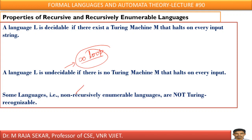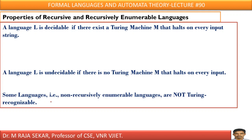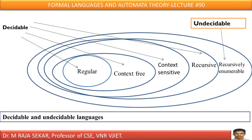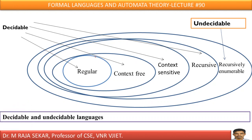In the case of non-recursively enumerable language, your machine may accept and halt, or not accept and halt, or they may enter into an infinite loop. Because of this infinite loop, non-recursively enumerable language is undecidable. I already discussed all these concepts in my previous lecture, including the membership function. I am again requesting you to go through lecture number 89.